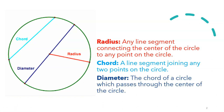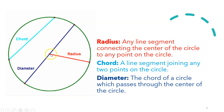Diameter. The chord of a circle which passes through the center of the circle. So this particular indigo colored line segment is the diameter. It is a chord which passes through the center of the circle. My dear students, diameter is the longest chord of a circle.